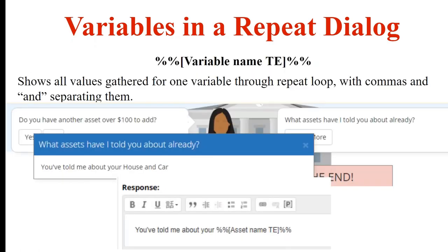If you're using a macro and call out the variable itself while it holds multiple values, it will display all iterations of that variable. You might use this on the 'do you have any more' question — a learn more option that says 'What assets have I already told you about?' with a macro like 'You've told me about your [AssetNameTE].' AdaJ Author will automatically insert commas and the word 'and' when displaying multiple values — for example, 'your house and car,' or 'your house, your car, and your jet ski.'